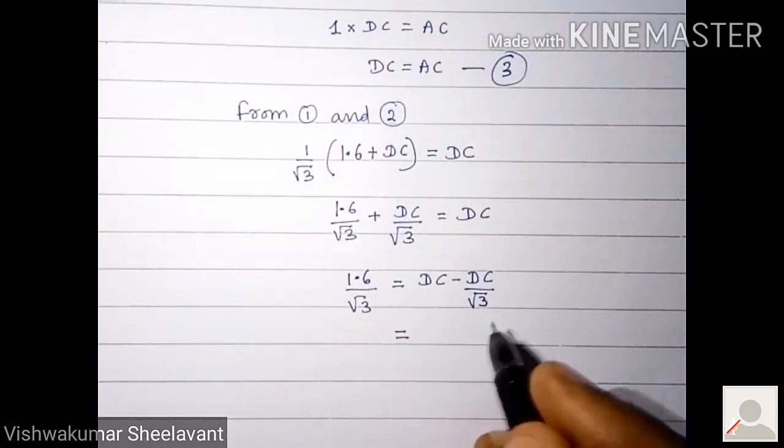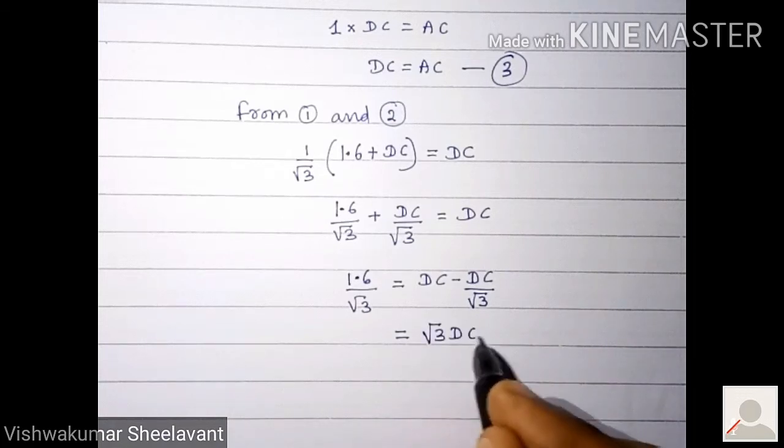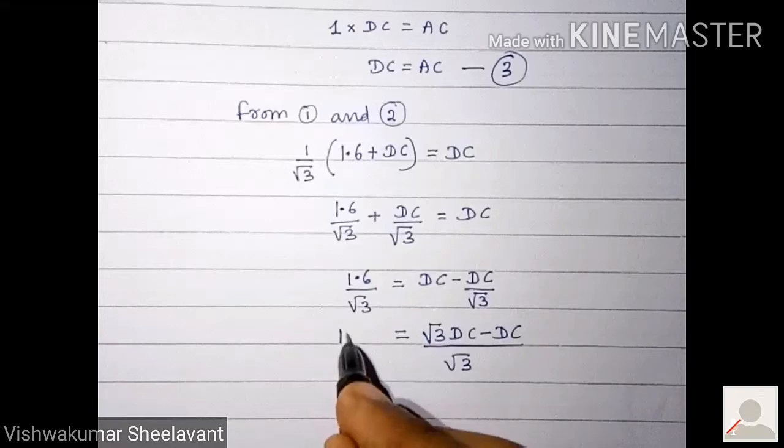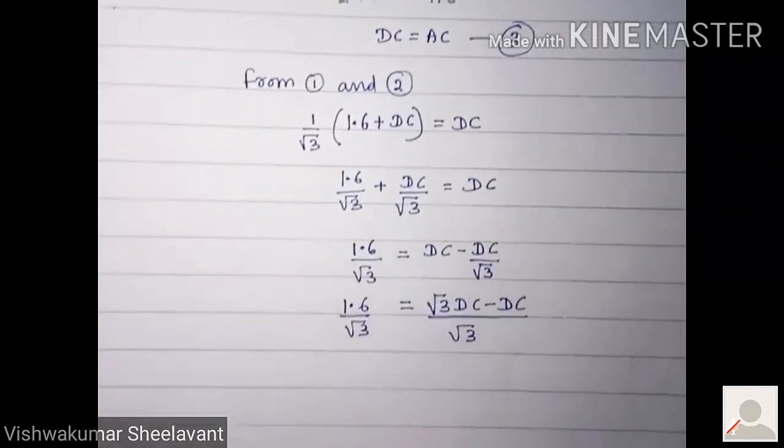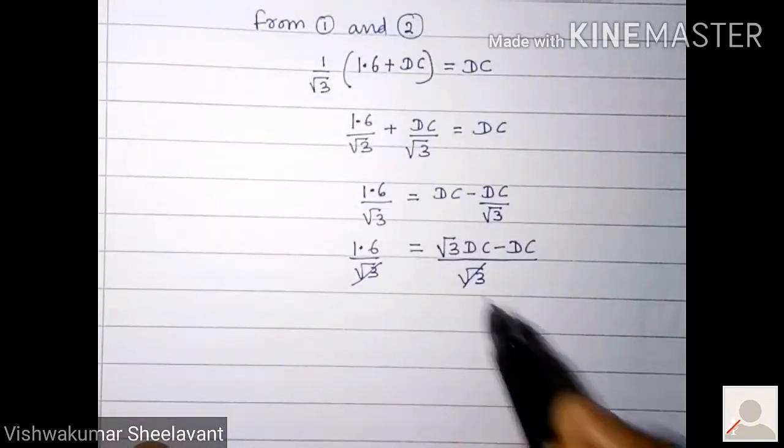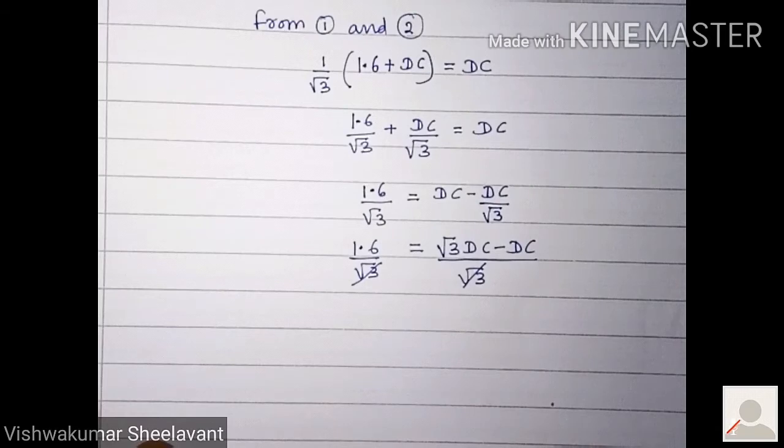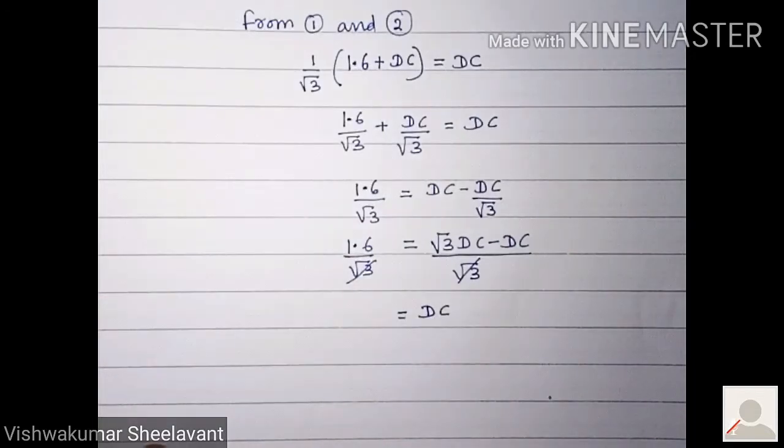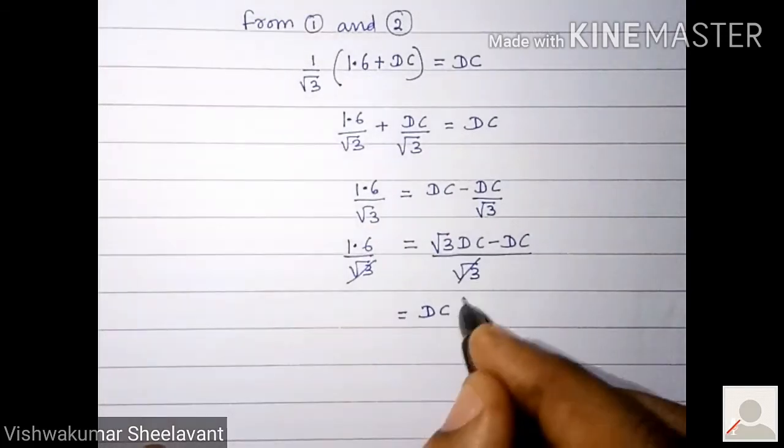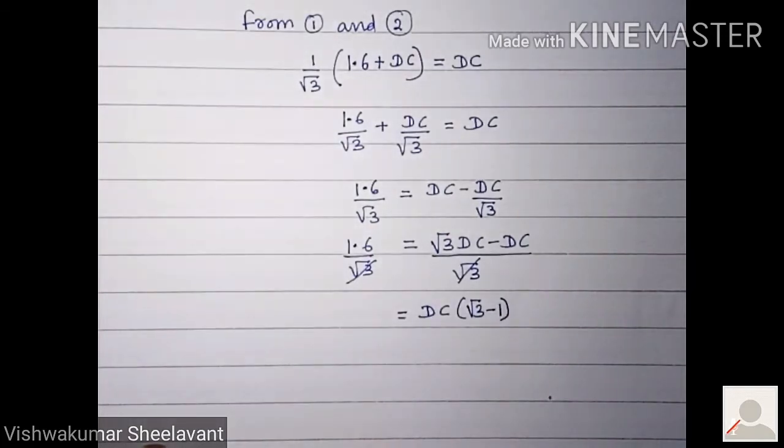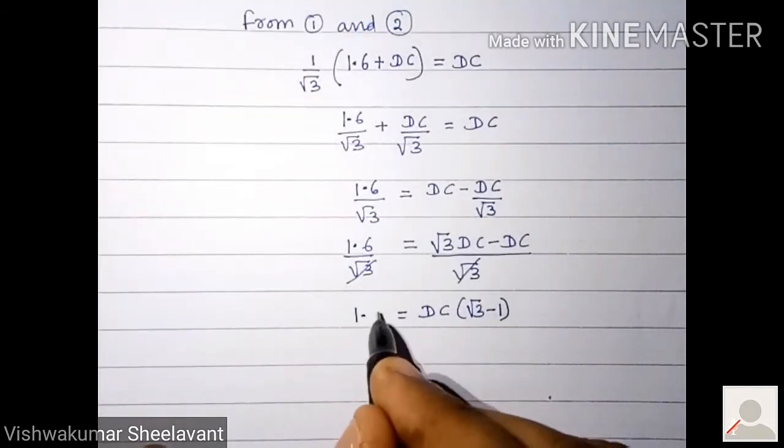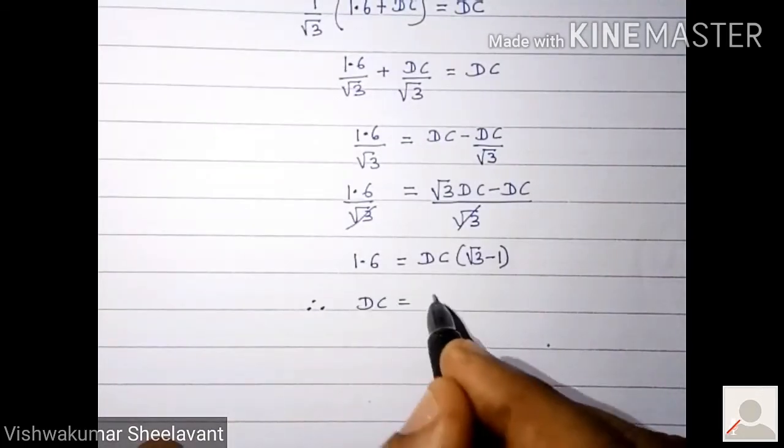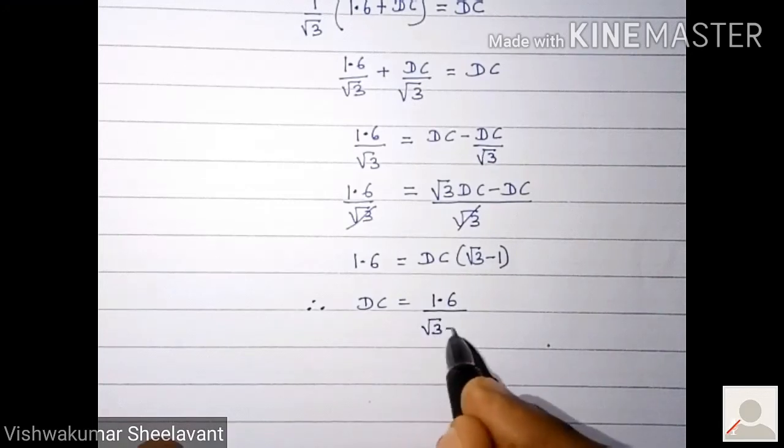Taking LCM: root 3 DC minus DC upon root 3 equals 1.6 upon root 3. On both sides we have root 3, we will cancel them. Taking DC common outside, we get DC times root 3 minus 1 equals 1.6. Therefore DC equals 1.6 upon root 3 minus 1.